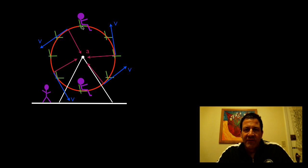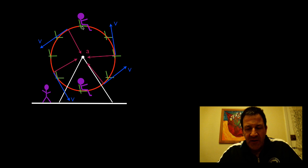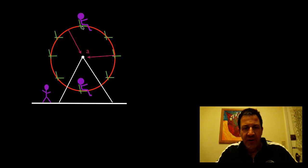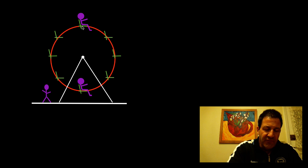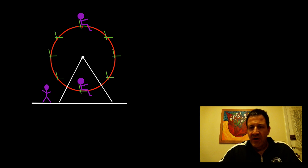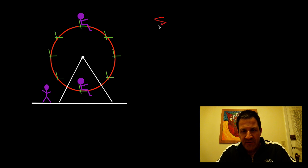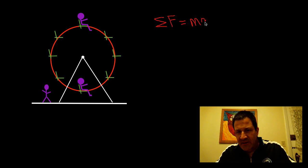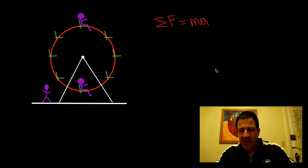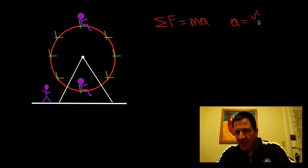That's uniform circular motion: constant speed, constantly changing velocity. Constantly changing velocity means you are accelerating. Now we're going to use Newton's second law, which says that the sum of the forces is equal to the mass times the acceleration. For uniform circular motion, you can calculate the acceleration using the equation v squared over r.